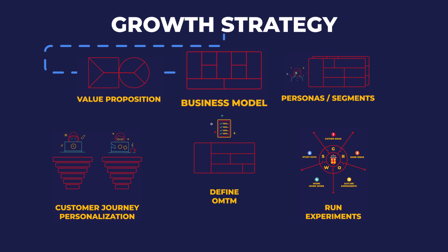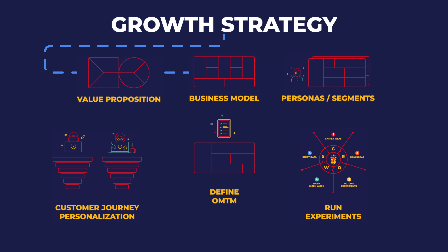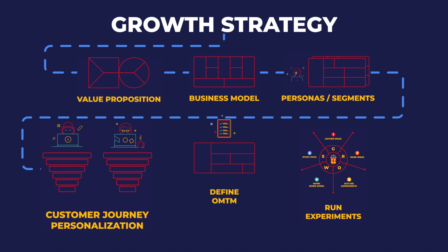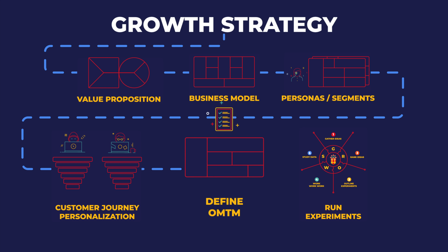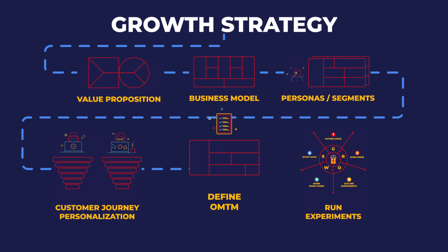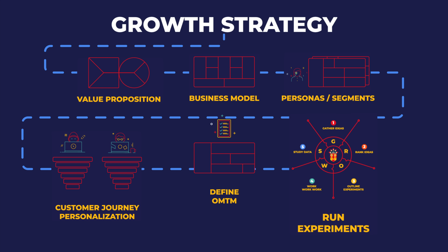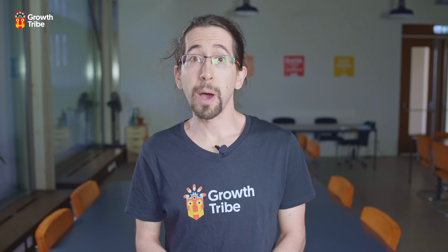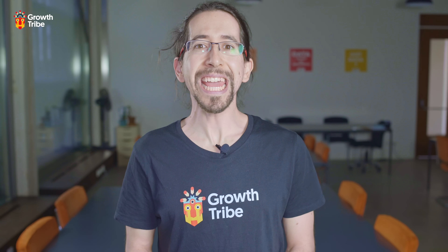Let's see the big picture first. Your growth strategy should look like this. You validate your value proposition canvas and business model canvas at least 80%. Then you find your personas to ensure you have product market fit. You model the customer journey of these personas through Pirate Funnels, focus on the one metric that matters, then run experiments to improve this metric with the growth process. This is already a powerful strategy, but AI can take it further.